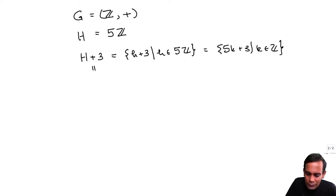And this is also the same as 3 plus H, because in this group of integers under addition, A plus B is B plus A. So addition is commutative. So whether I write 3 plus H or H plus 3, it is all the same. This is what is called an abelian group.